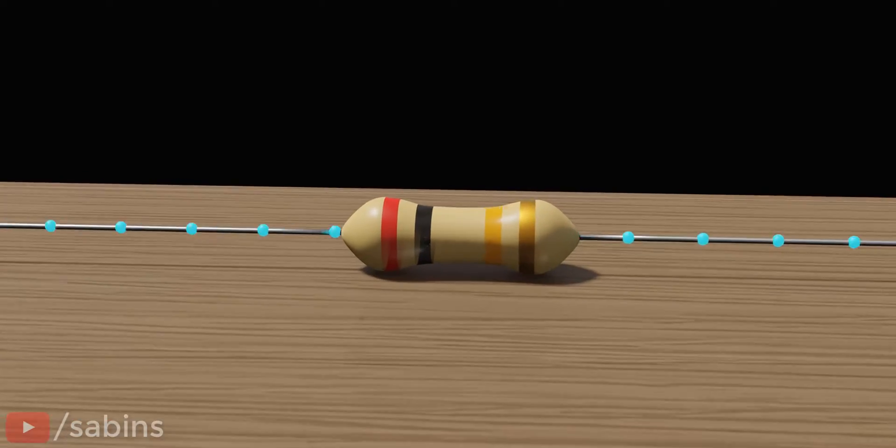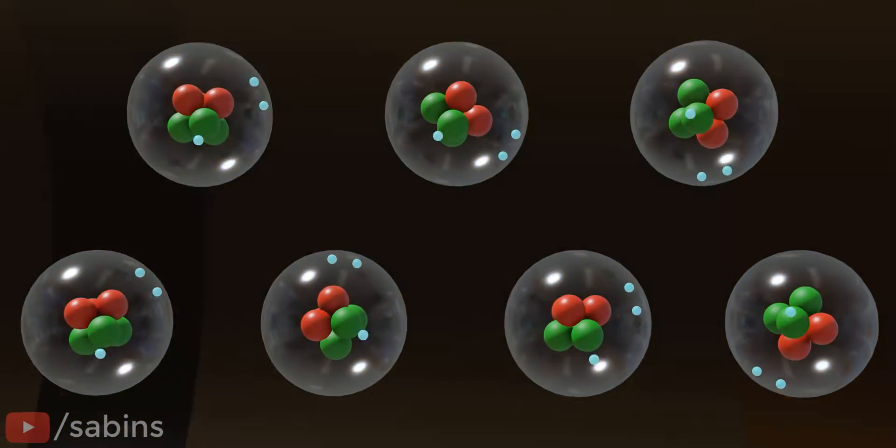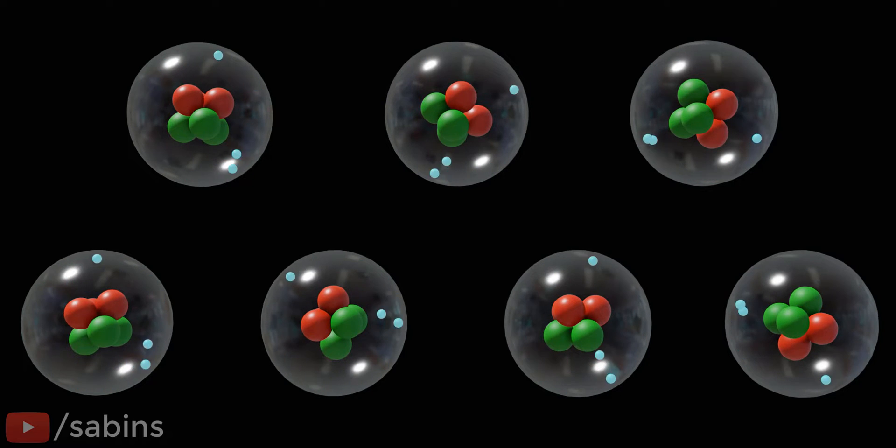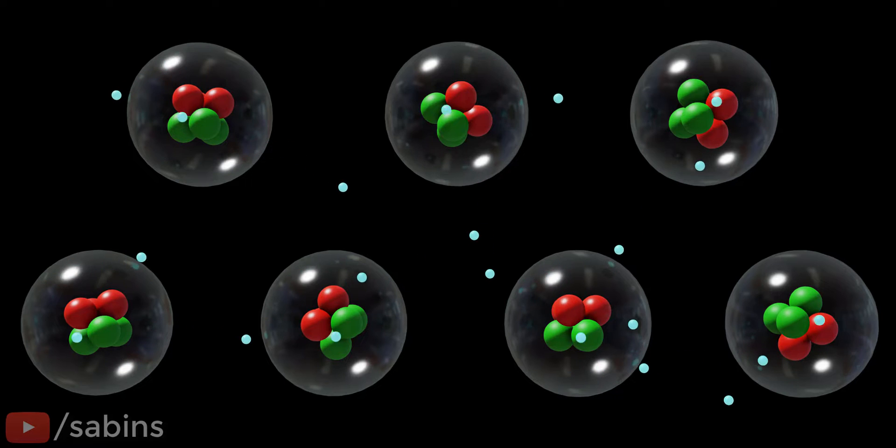We need to approach things at the atomic level to understand Ohm's law. An atom always has a few electrons around the nucleus. In a conductor, some of these electrons will be loosely bound and free to roam around, as shown.